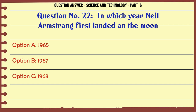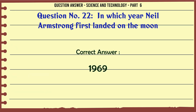In which year did Neil Armstrong first land on the moon? A. 1965. B. 1967. C. 1968. D. 1969. The correct answer is 1969.